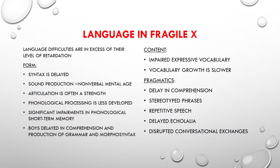Language difficulties in Fragile X Syndrome can include delayed syntax and form with less intelligibility and connected speech, shorter MLUs, or mean length of utterances, and they have less complex noun and verb phrases. Questions and negations are commensurate with nonverbal skills. Their sound production is commensurate with nonverbal mental age as well, and articulation is often a strength for these kids.